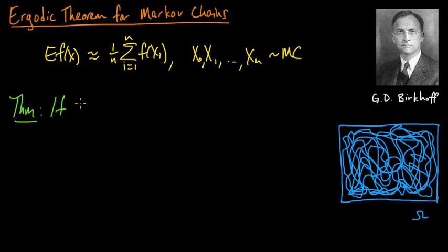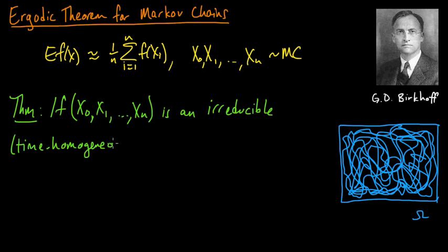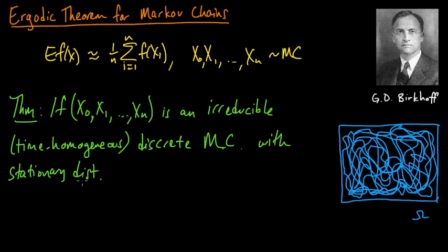So here's the theorem. If X0, X1, up to Xn, it'll be convenient to start with X0, is an irreducible, write that clearly so you can understand it, irreducible and also, to be precise here, time homogeneous, almost always we're dealing with time homogeneous Markov chains, discrete space Markov chain, so this implies that it's a discrete time Markov chain and it's also going to be a discrete space Markov chain with stationary distribution, we'll define all these terms in a little bit, stationary distribution π.